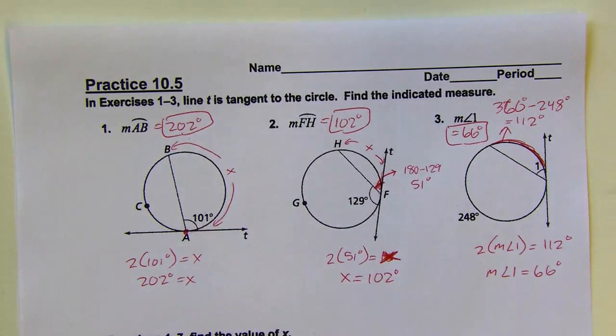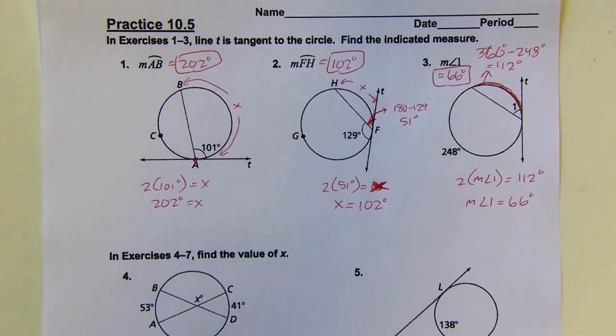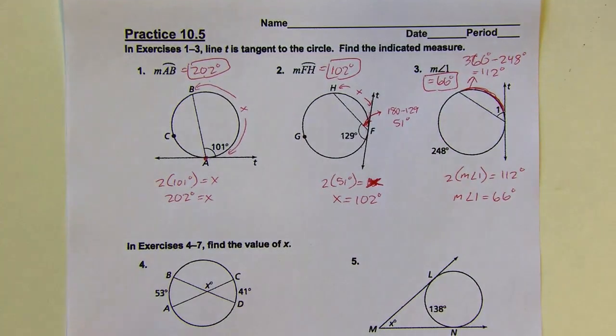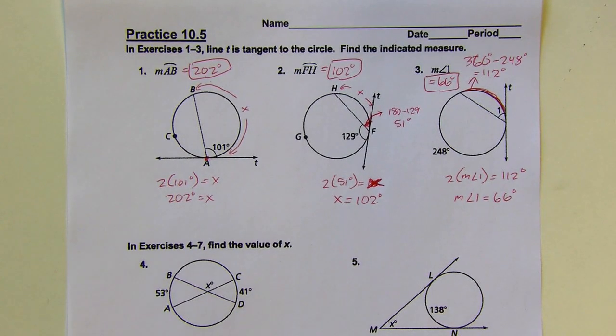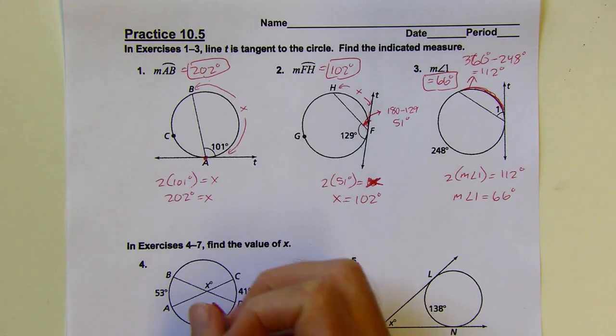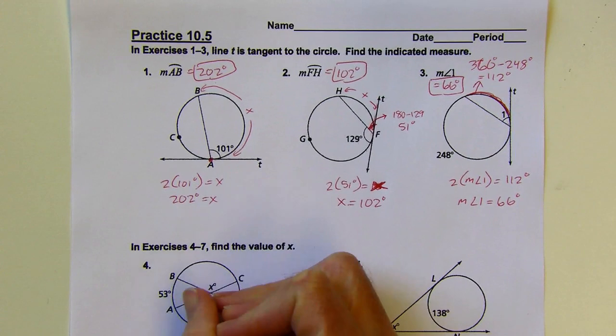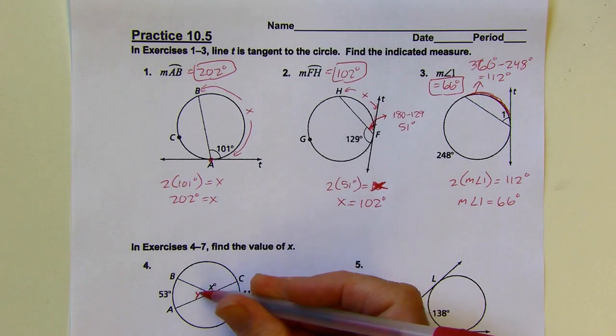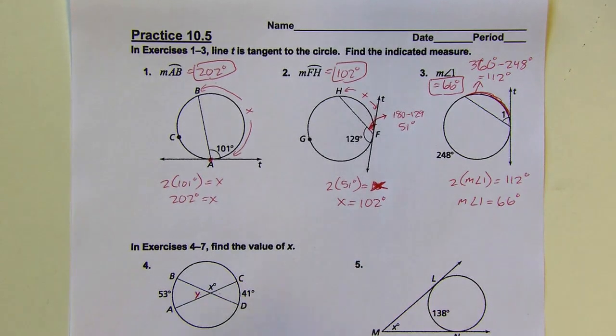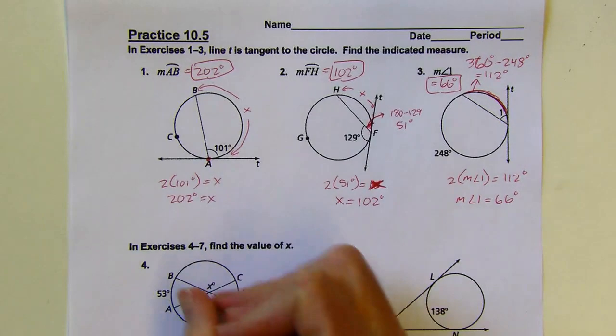Moving on to the next set of problems. This next one, there's a little bit of a trick. I've got two chords that meet inside a circle, intersect inside a circle. There's a formula I can use to find this angle or this one. I'm going to call this Y. Vertical angles, they're asking for X, but if I find Y, then I can get X because I've got a linear pair.